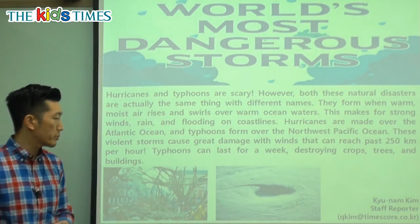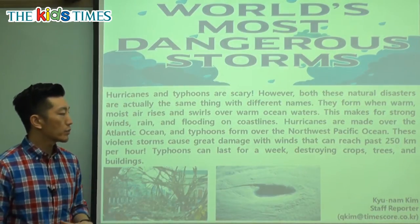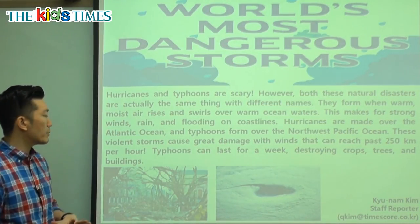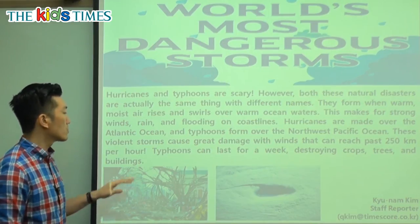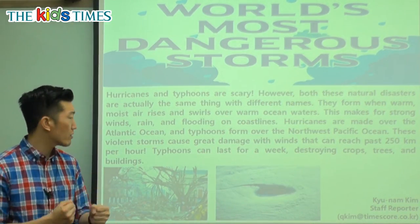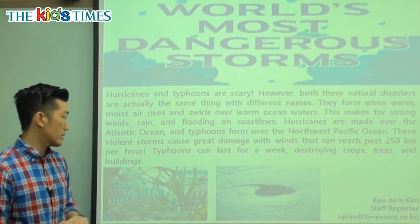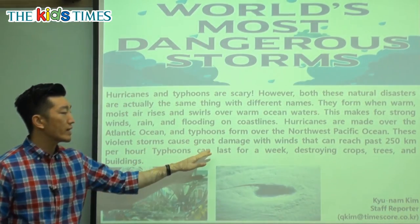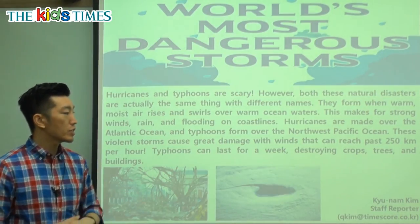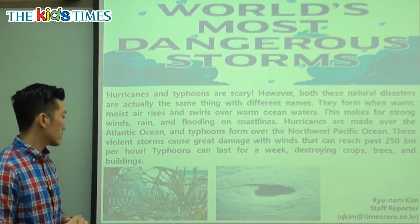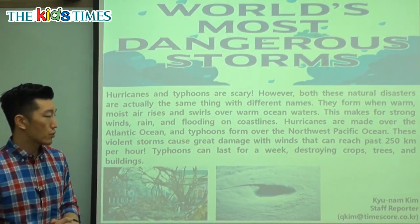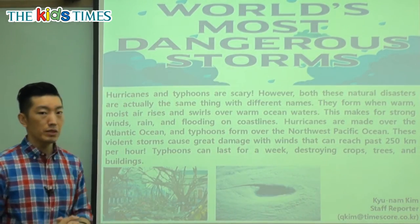These violent storms cause great damage with winds that can reach past 250 kilometers per hour. Wow! Violent means not very calm, but very strong and very dangerous. These violent storms can destroy. Typhoons can last for a week, destroying crops, trees, and buildings.